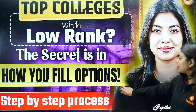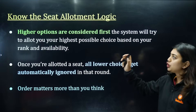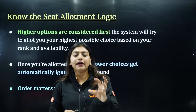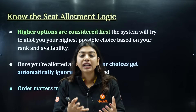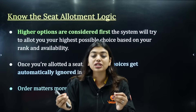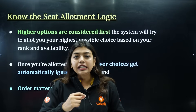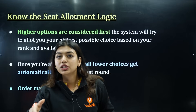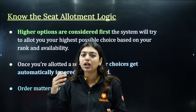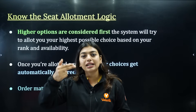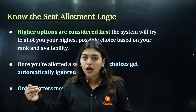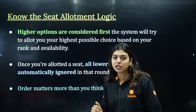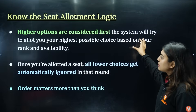First tip is: know the seat allotment logic. In option entry, you are selecting the colleges and branches you want to join depending on your rank. From that set of options you select, the system will automatically try to allot you in the mock round, first round, second round. You will be continuing the counseling process based on your choices.